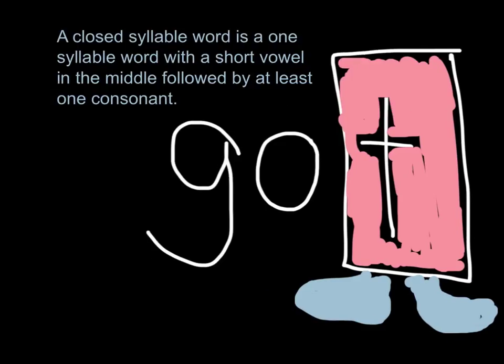A closed syllable word is a one-syllable word with a short vowel in the middle, followed by at least one consonant.